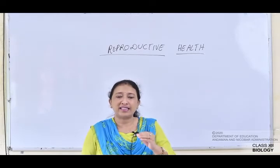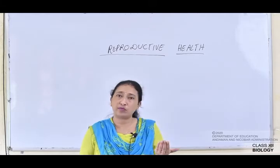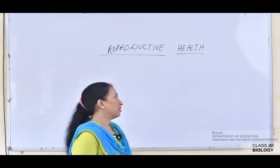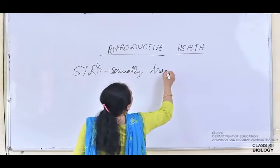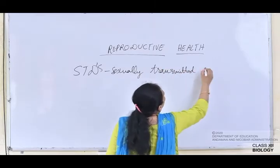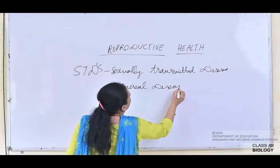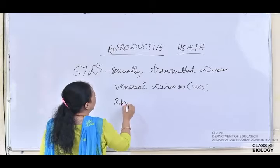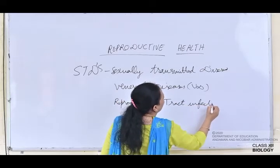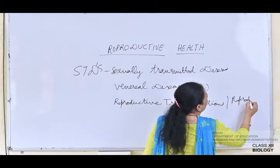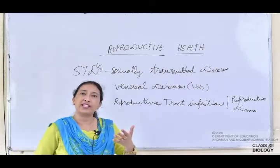Now we will see that there are so many diseases which are much more harmful than HIV, that is AIDS. Those are STDs, which can also be known as sexually transmitted diseases, venereal diseases, VD, reproductive tract infections, reproductive diseases, and also as STIs — that is sexually transmitted infections.